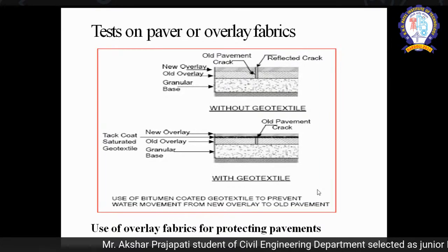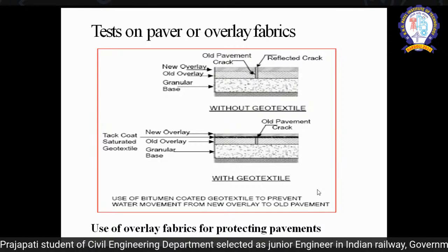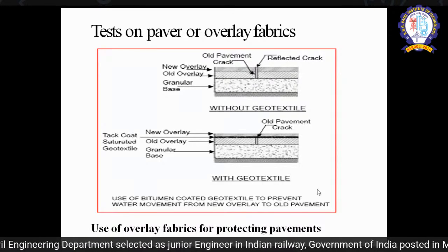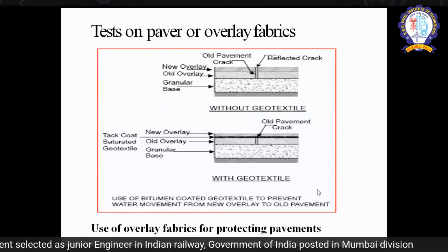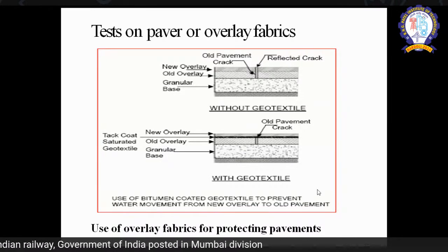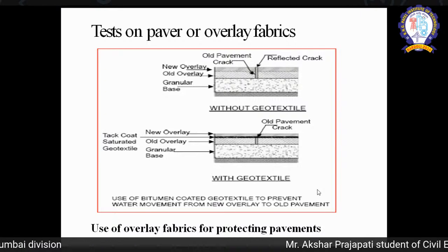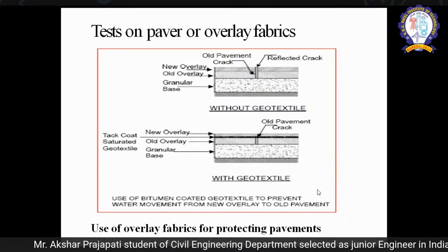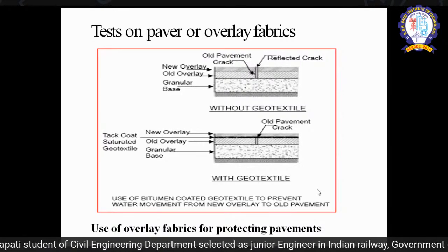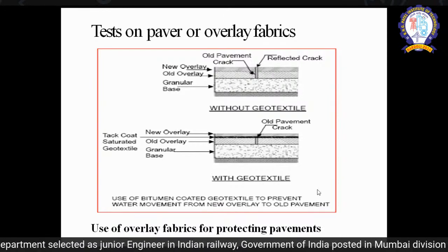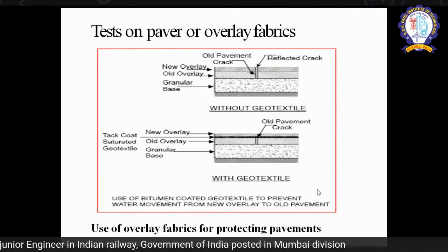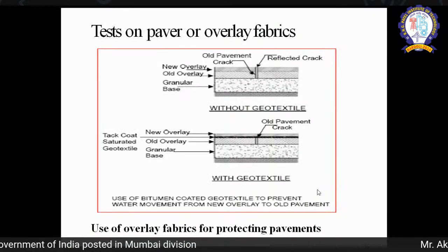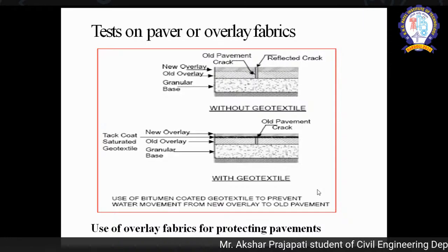For geogrid, the basic properties required are aperture opening — based on the amount of opening, you select according to your application. Other properties include thickness of rib, junctions, number of ribs per meter length — all depending on the application. Mass per unit area gives you the weight of your geosynthetic and what tensile strength it has. Based on practical application, you have to select these properties accordingly.